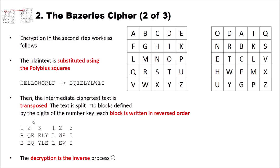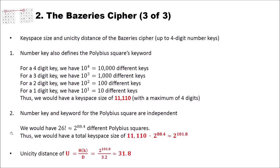Now let's have a look at the key space size and the unicity distance of the Bazeries cipher, up to four digit number keys. First, let's have a look at the original case, where the number key also defines the Polybius squares keyword. For a four digit key, we have 10 to the power of 4, which are 10,000 different keys.